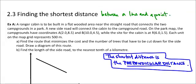The principle is that the shortest distance is always going to be the perpendicular distance. Let's start with this example and I'll show you as I go. A ranger cabin is to be built in a flat wooded area near the straight road that connects the two campgrounds in a park. We're assuming that all of this area is equally wooded and equally flat, so it will be easiest to find the shortest distance.